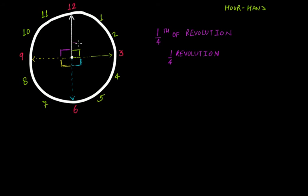Then it again takes a turn from 6 to 9 — one more right angle turn. Now this is three right angles: one, two, and three. Therefore for three right angles, the total revolution will be three-fourths of a revolution, that is three-fourth revolution.